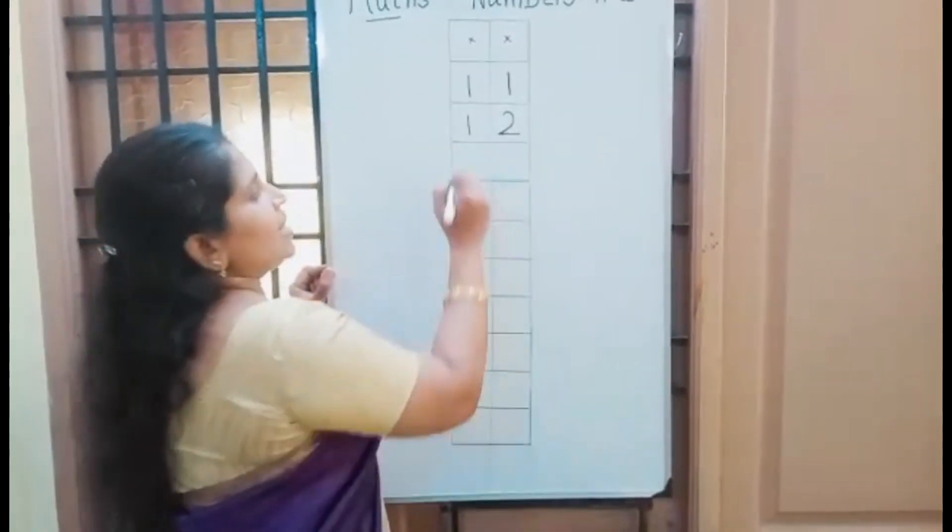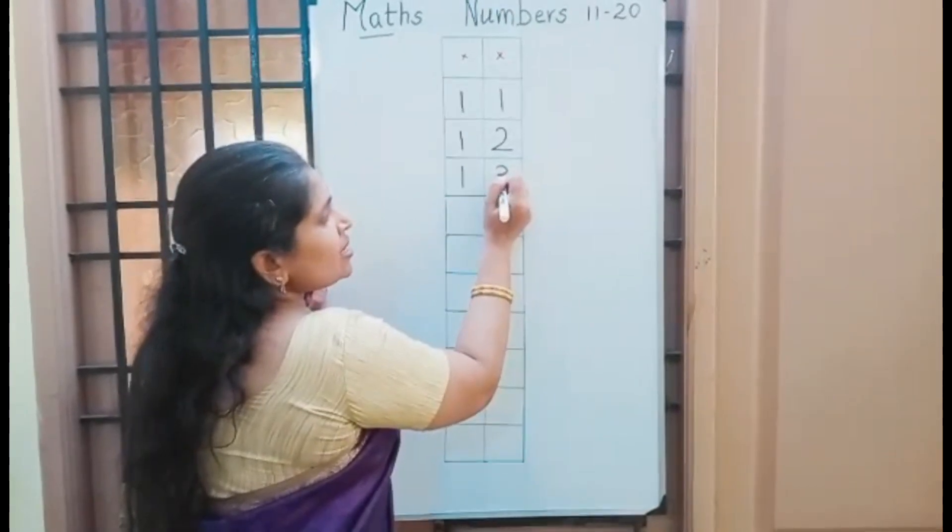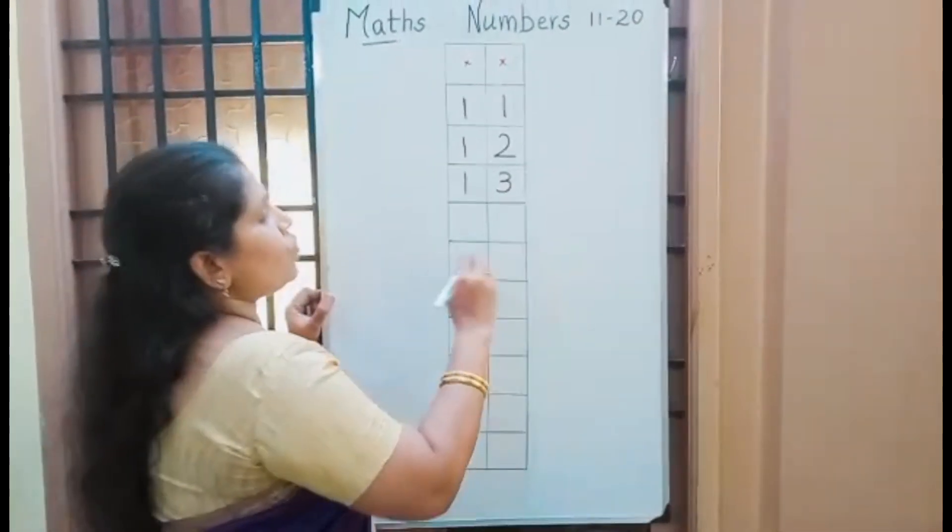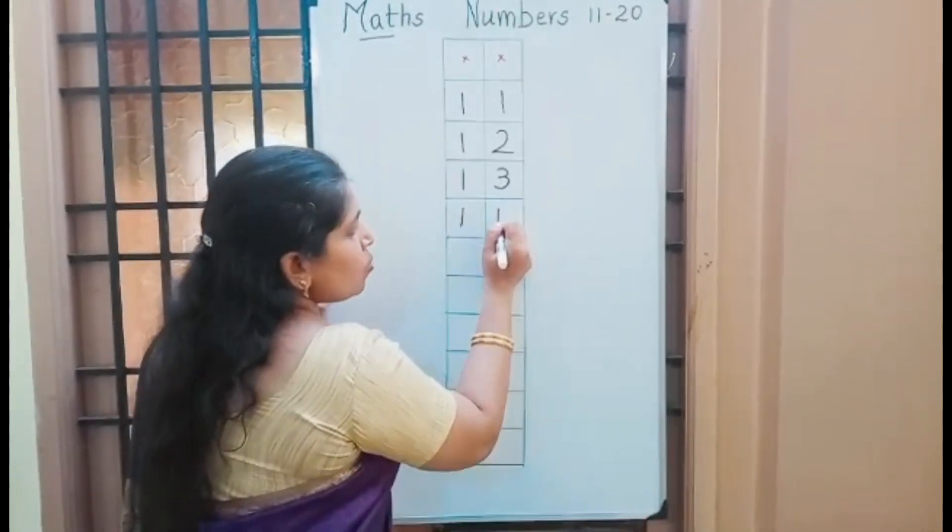1, 3, 13: 1 in 10s place, 3 in 1s place. 1, 4, 14: 1 in 10s place, 4 in 1s place.